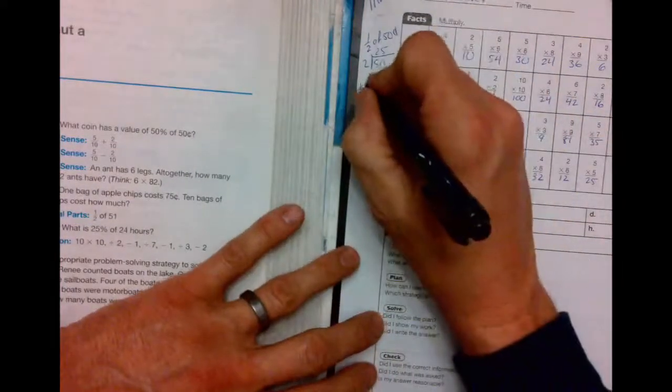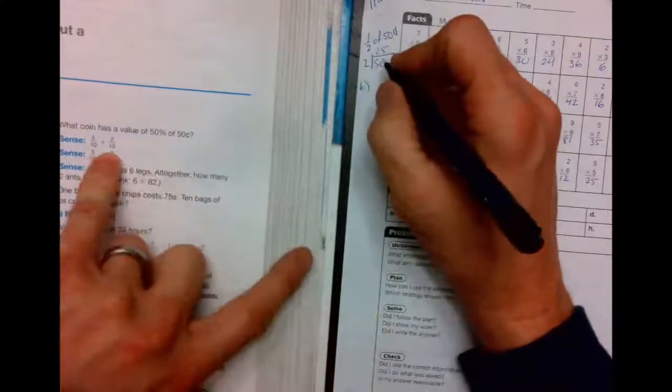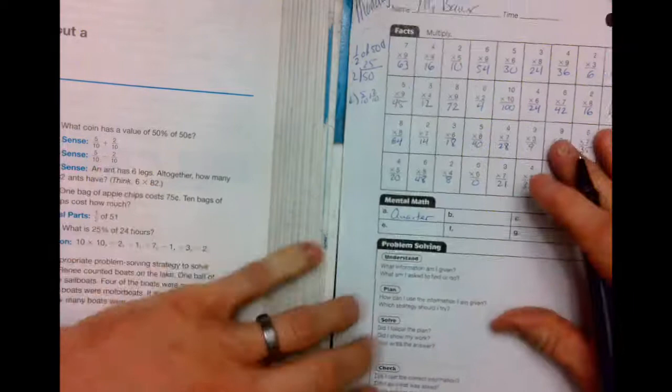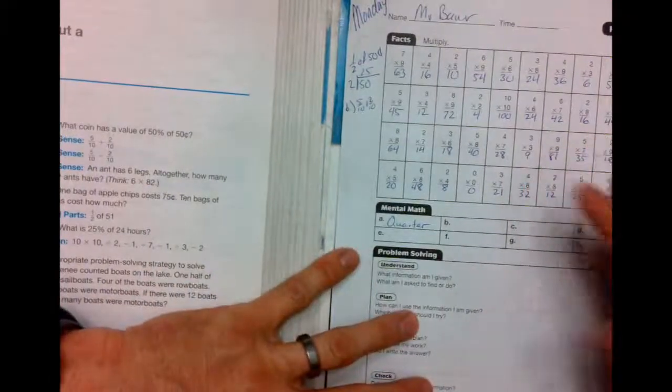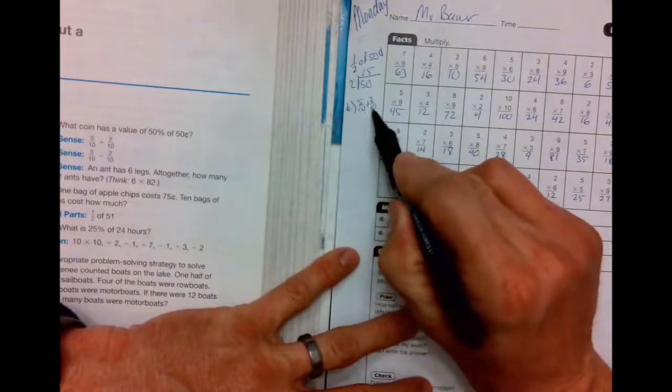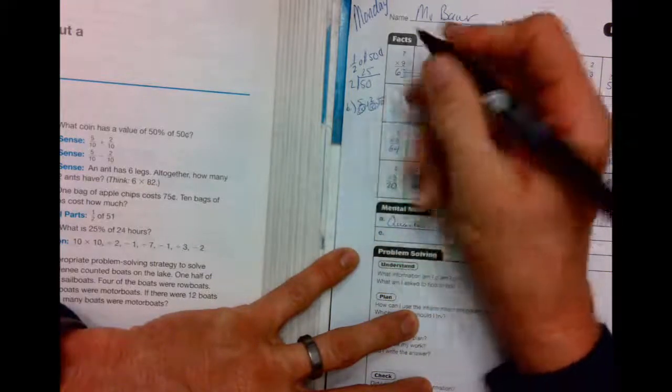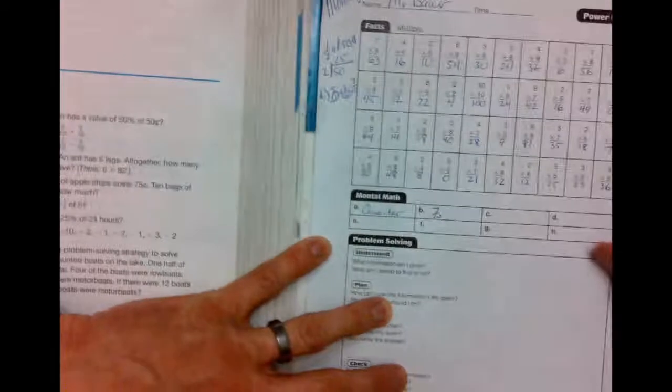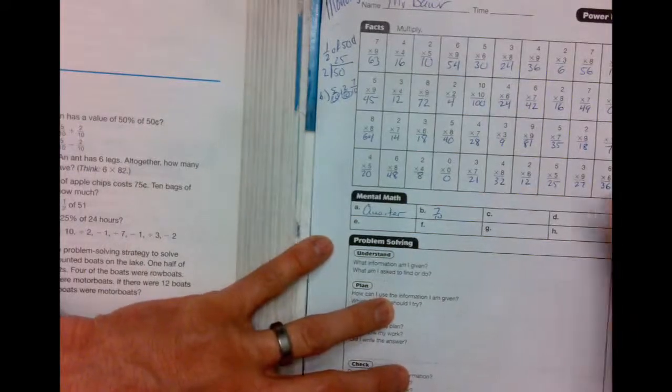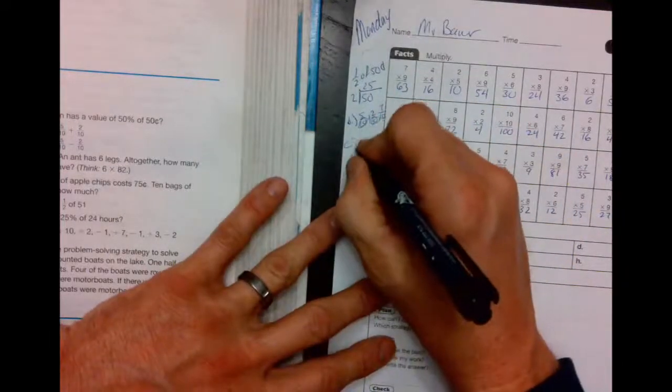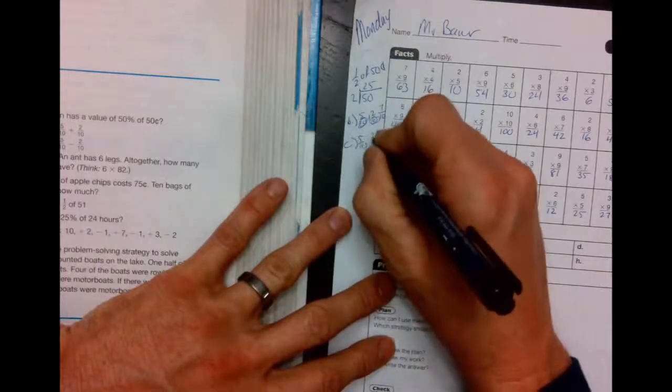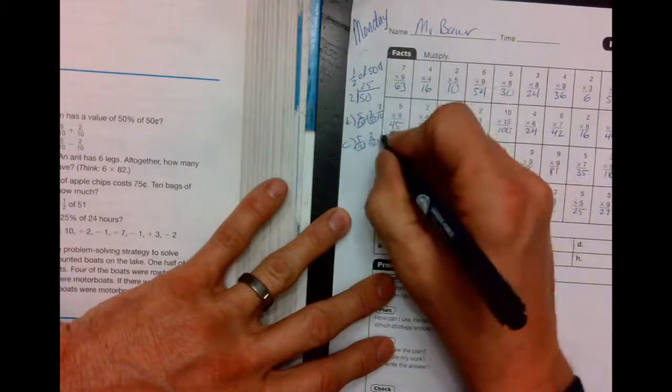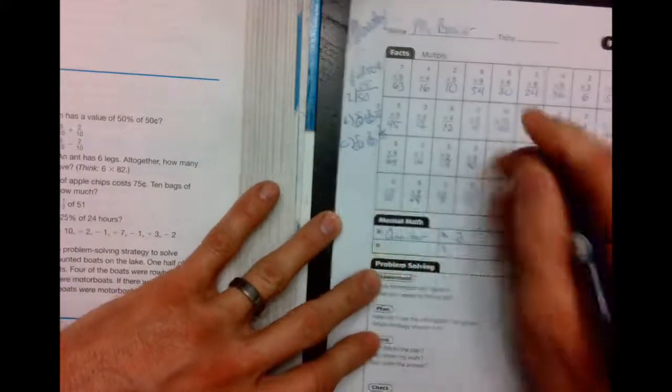B, 5 tenths plus 2 tenths. Whenever I add fractions, I'm going to add the numerators, keep the denominators. 10, 10, 10, 10. And 5 plus 2 is 7. 7 tenths. Same thing for C, except it's a subtraction problem. 5 tenths minus 2 tenths. Keep the denominators. And 5 minus 2 is 3.